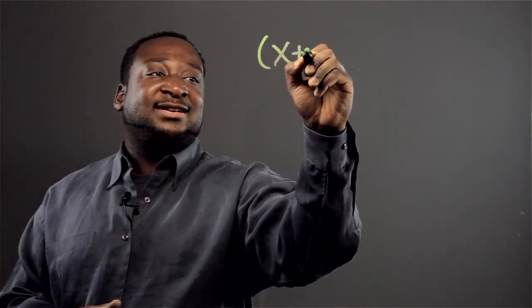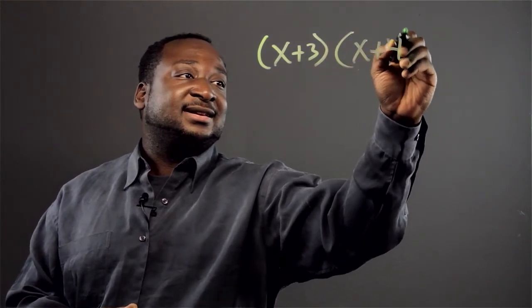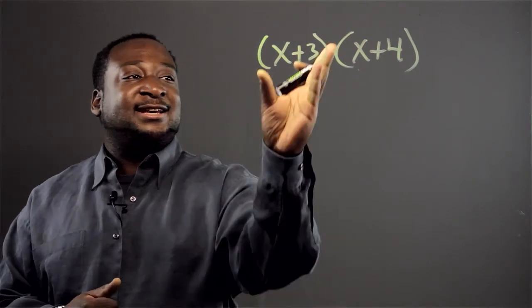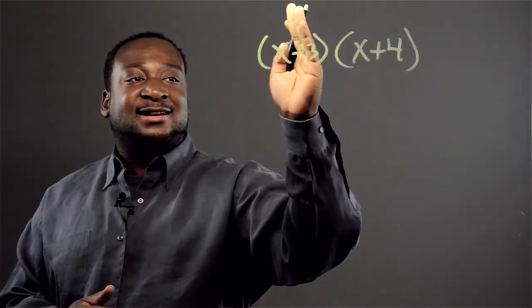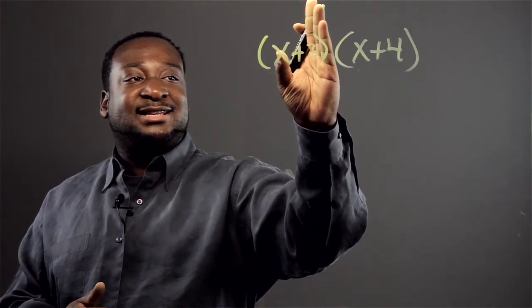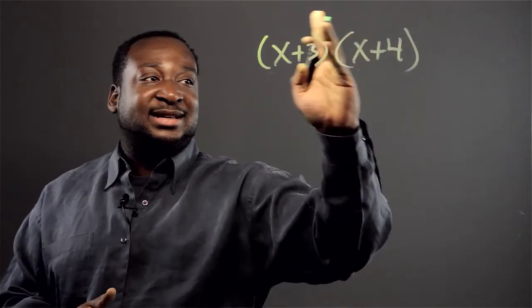Basically, let's say we have two factors here. Now to simplify these, all you do is you take one factor and you multiply every term in the first factor times every term in the second.